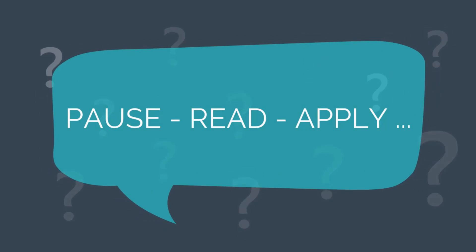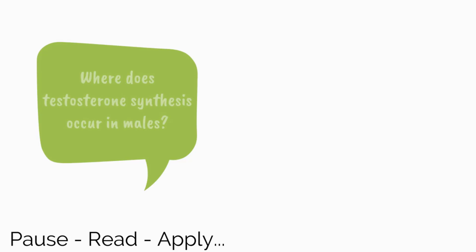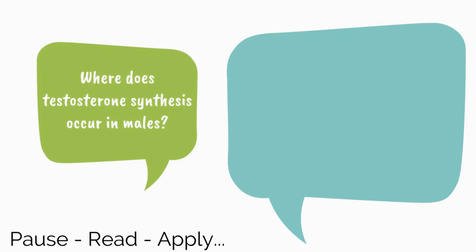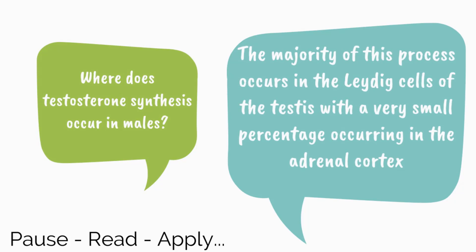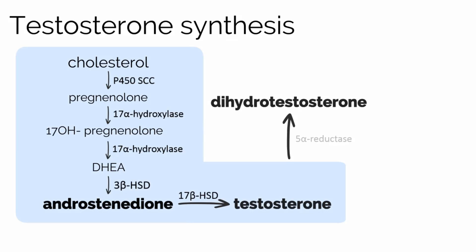Let's pause, read, and apply. Where does testosterone synthesis occur in males? In males, the majority of this process occurs in the Leydig cells of the testes, with a very small percentage occurring in the adrenal cortex.